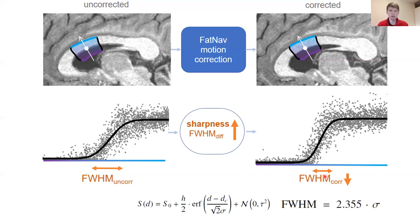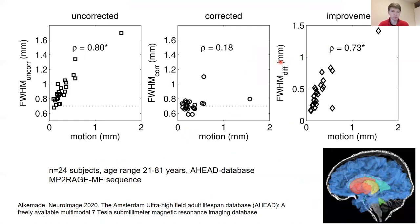We ensured the clustering was done coherently at sub-voxel resolution by sampling using a level set segmentation in local 3D clusters. Using fully adopted data from the AHEAD database — the cohort study published by the group of Alex Alkemade and the group of Birte Forstmann — we included 24 subjects. Here we see the sharpness in the uncorrected data (full width at half maximum) plotted against the estimated motion score for each subject, showing a strikingly strong correlation between motion and FWHM in the uncorrected data.